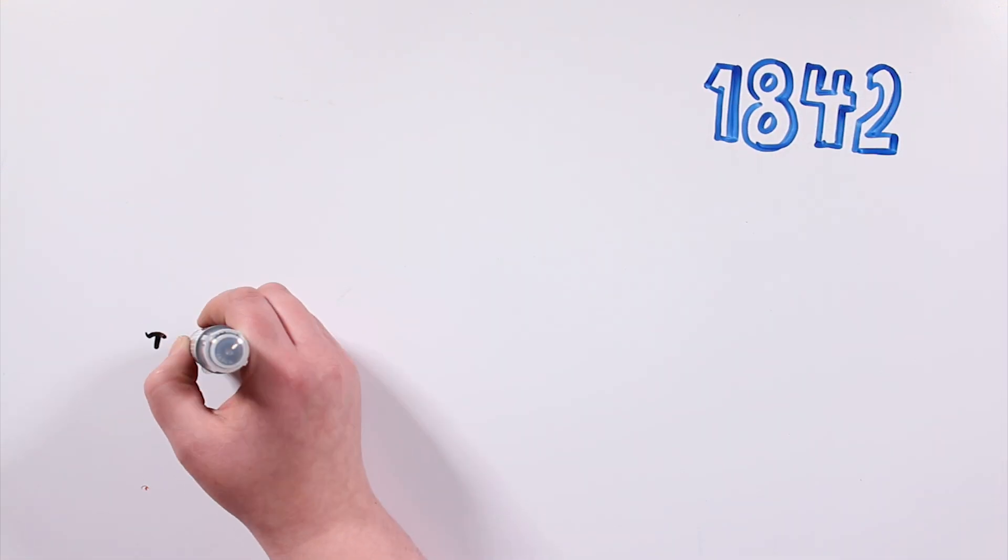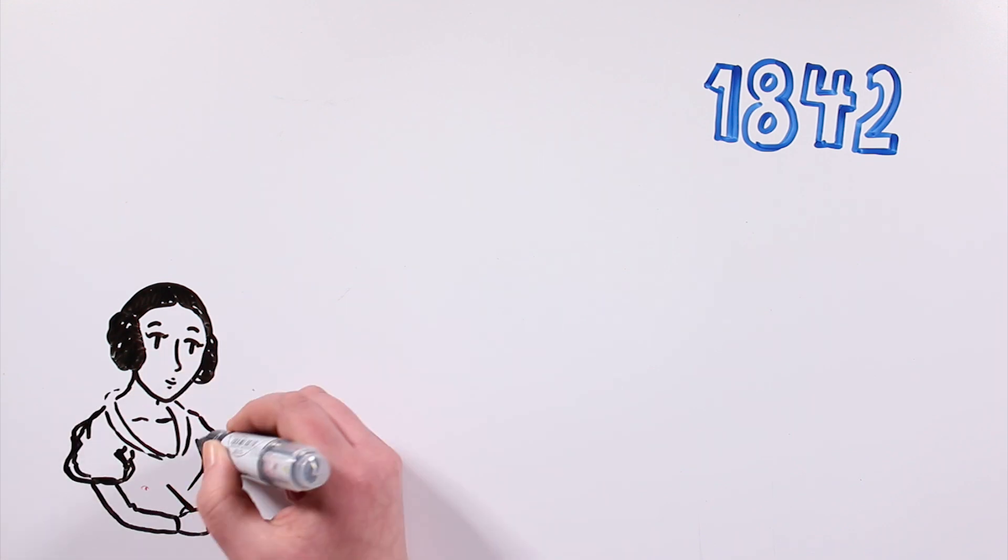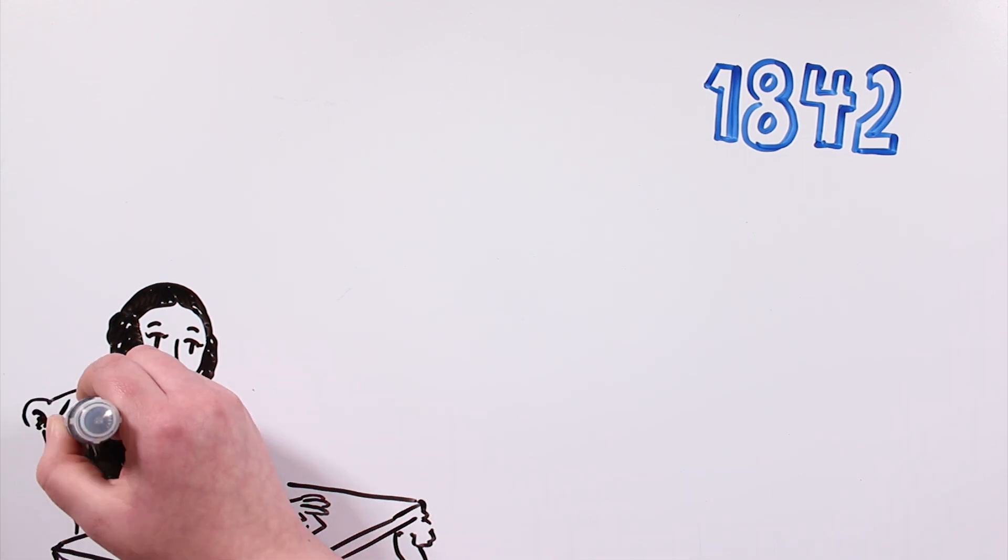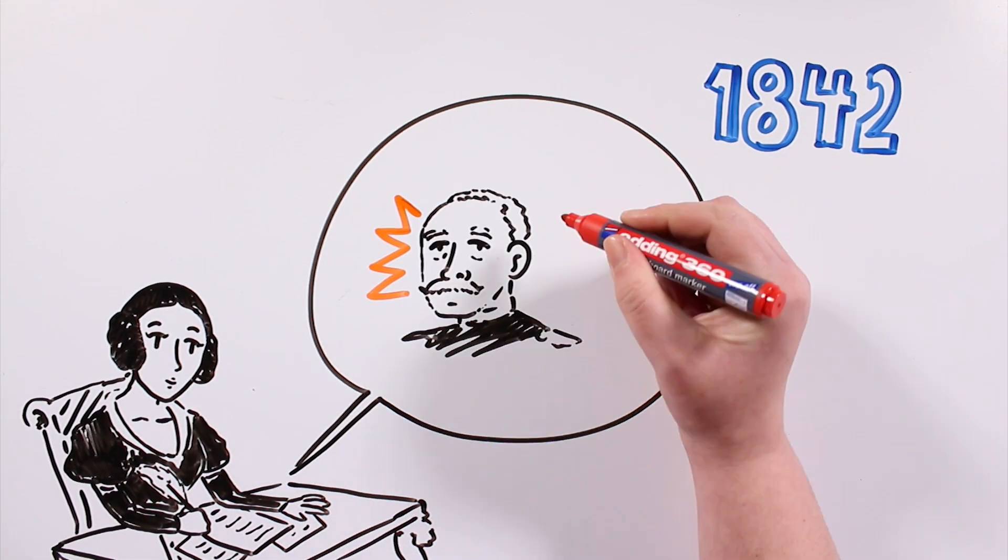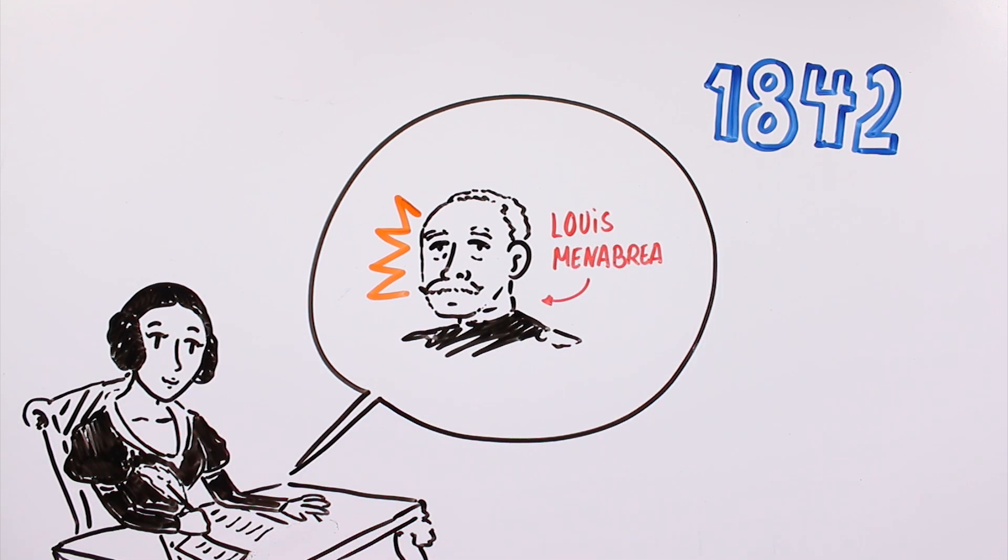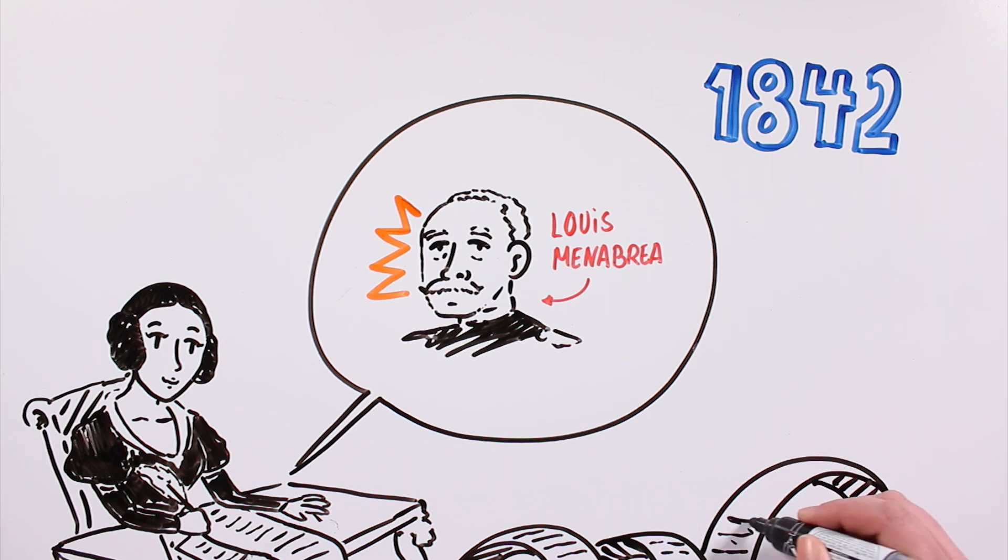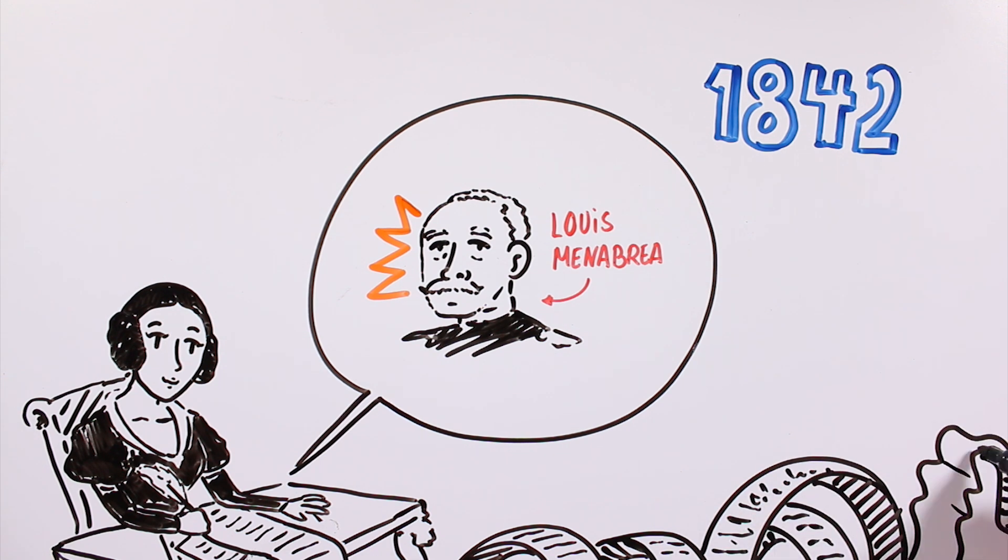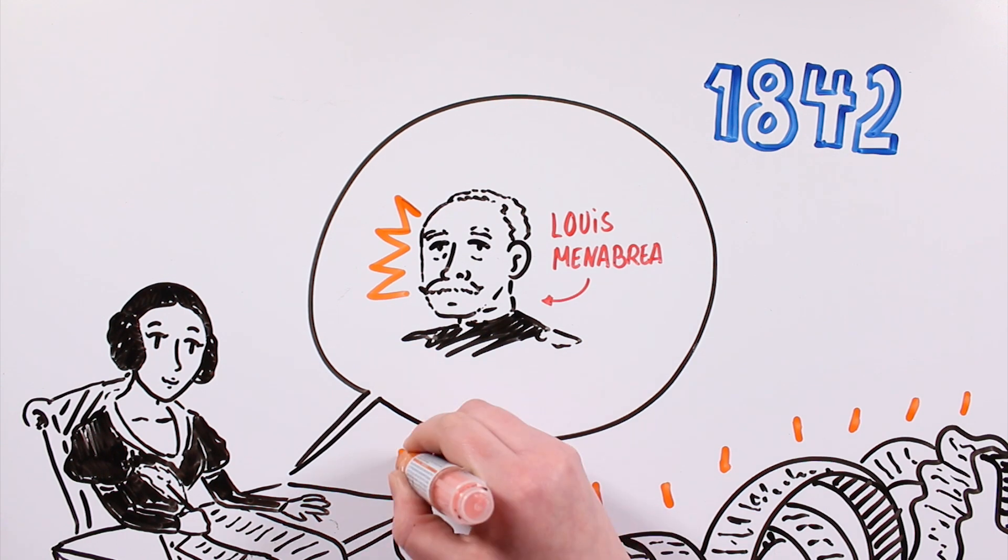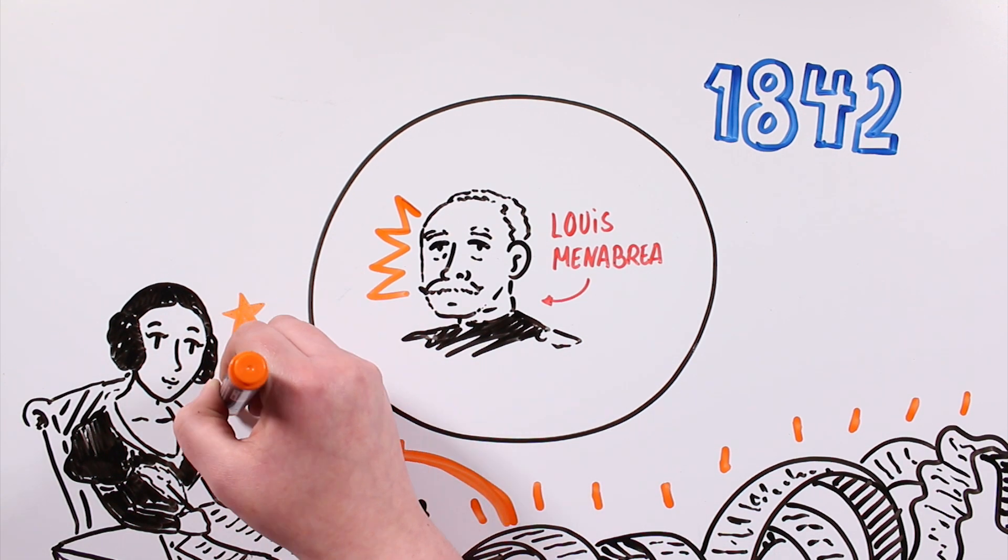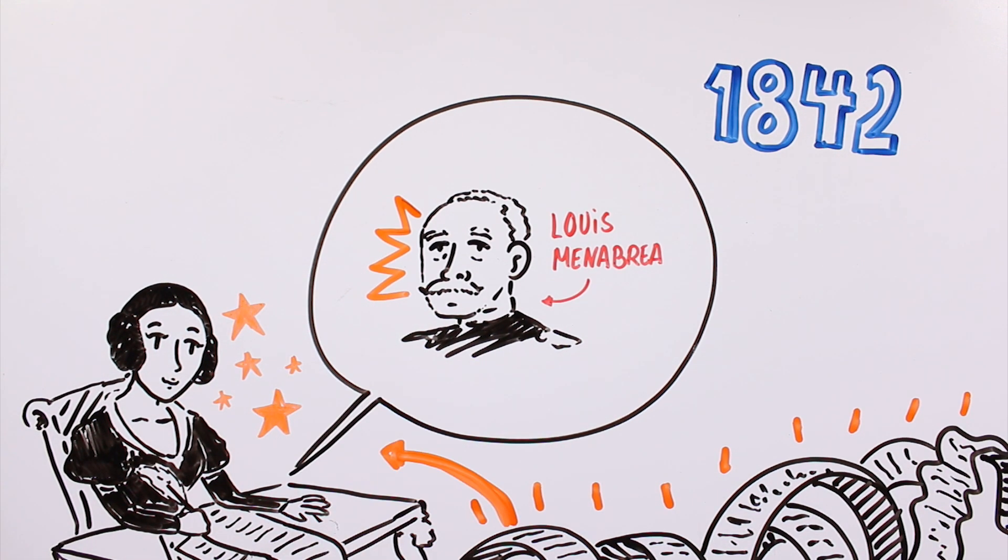It was 1842 when Ada translated an article written by the Italian mathematician Luis Menabrea about the analytical machine. But she not only translated the original text, she also added her own thoughts and ideas. The article ended up being three times longer than the original piece. Those notes were the origin of her fame as the first female programmer in history.